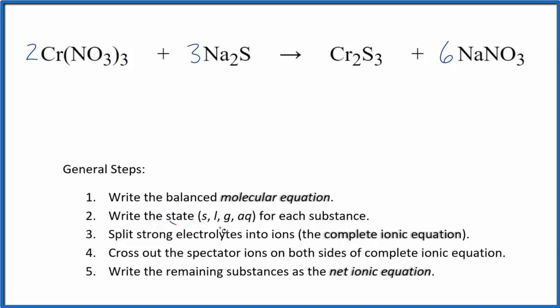Next, we need to write the state for each substance. If you know your solubility rules, compounds with the nitrate ion are very soluble. Compounds with the sodium ion are very soluble. In general, sulfides are insoluble. This chromium(III) sulfide is insoluble, so it's going to fall to the bottom of the test tube as a precipitate. This is a precipitation reaction, a double displacement reaction.